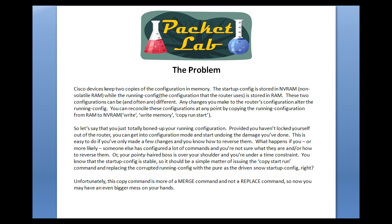Cisco devices keep two copies of configuration in memory. The startup config is stored in NVRAM, which is non-volatile RAM, while the running configuration is stored in just standard RAM. The difference between these two configurations basically comes down to the difference in the type of memory that they are stored on.